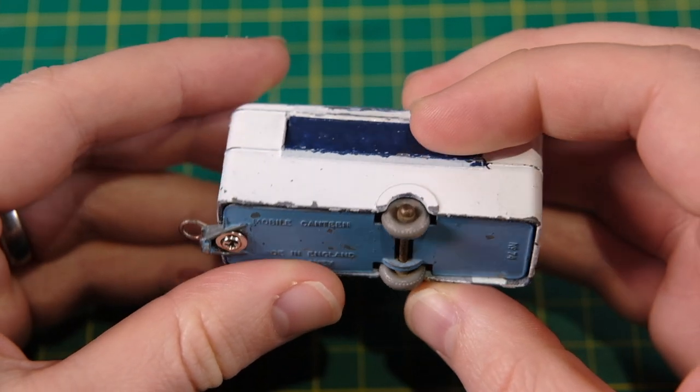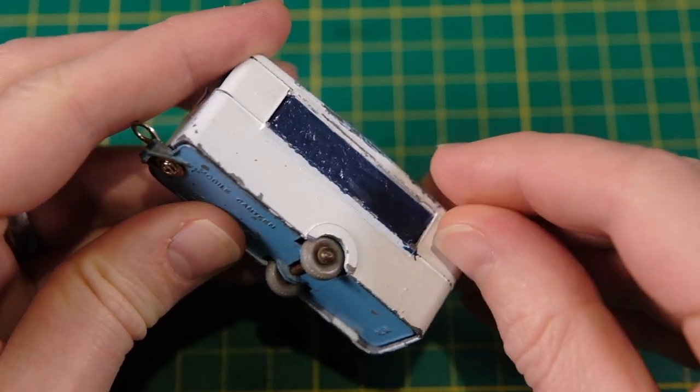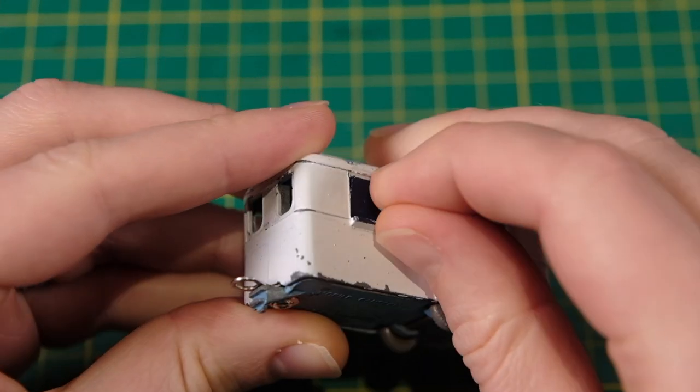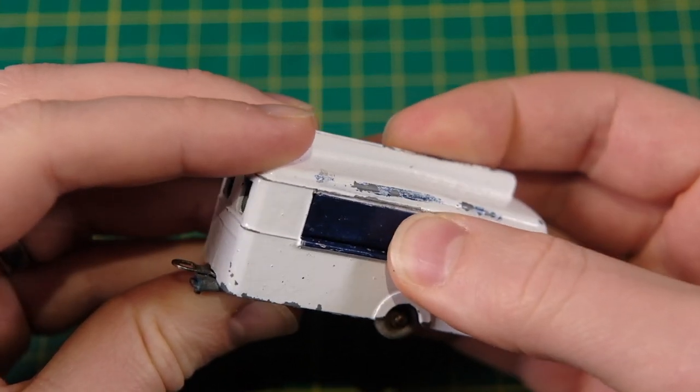This one however has been dismantled and repainted at some point in its past. It has a broken towing eye and no buffers on the hatch.